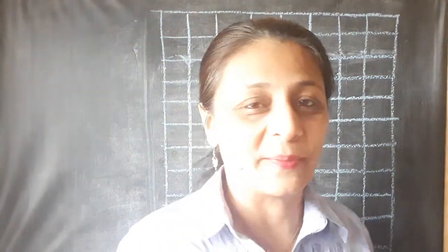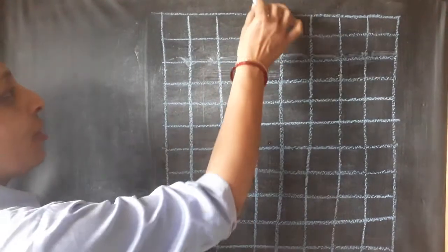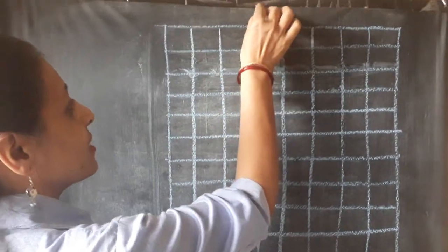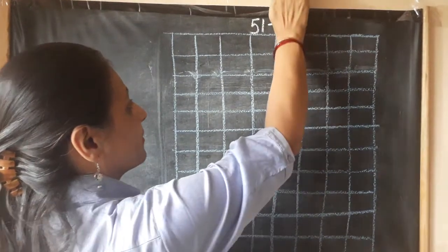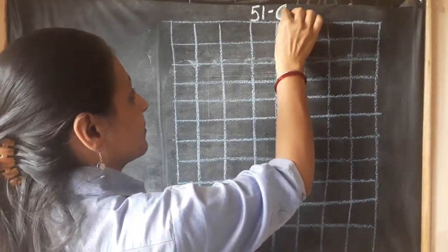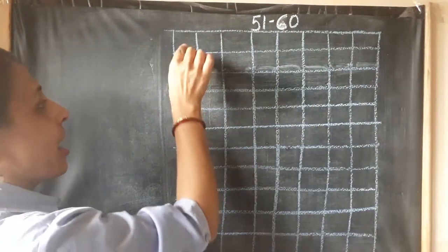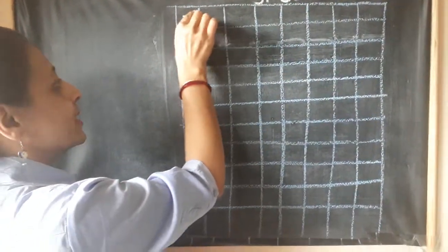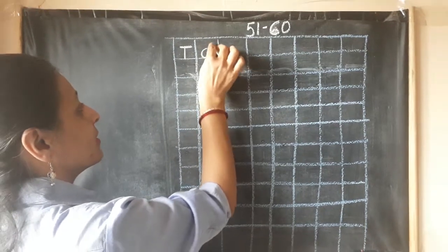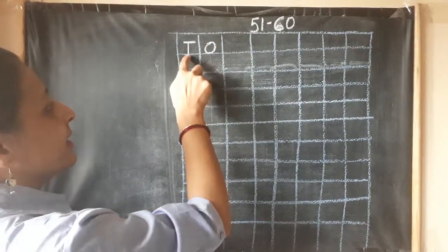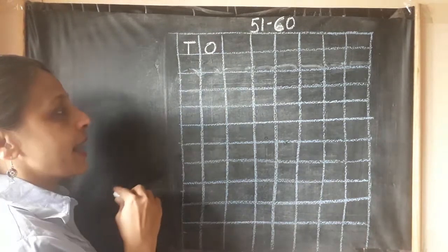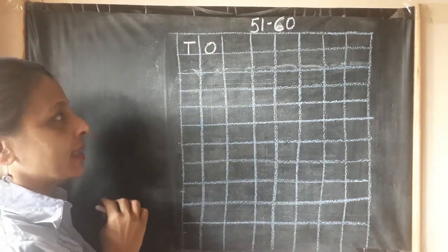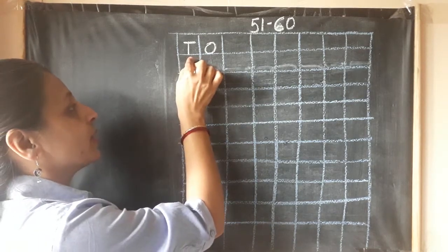Children, let's write 51 to 60 on the board. First of all, you are going to write 51 to 60. You are going to give the heading like this. Now, we always write numbers under T and O box. T represents tens, O represents ones. So now let's write 51 to 60. You are going to say numbers with me.